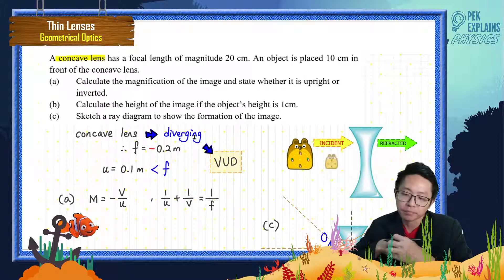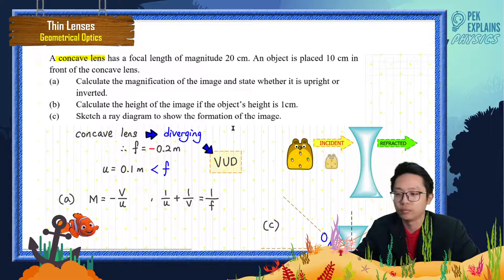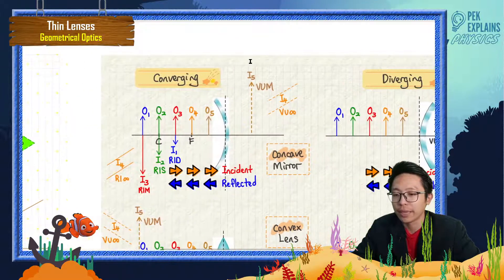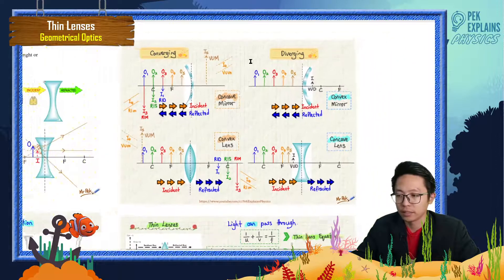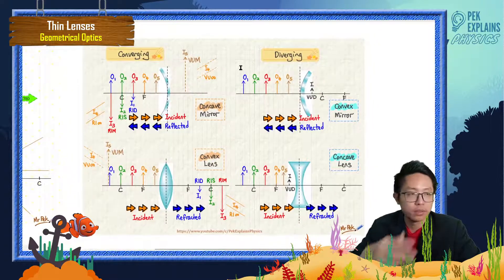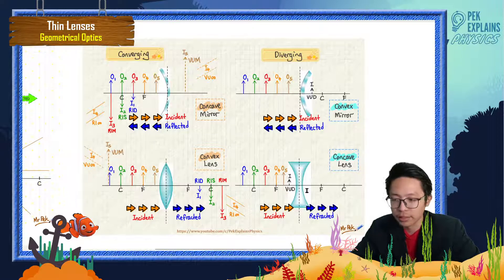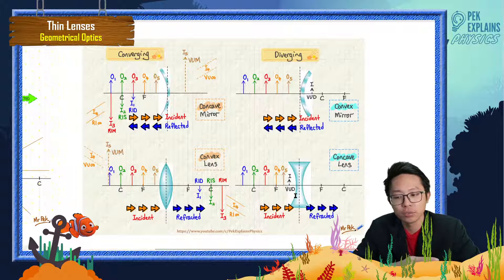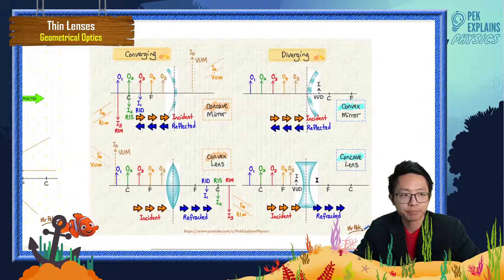For a diverging lens, there is only one characteristic of image it can form. Remember the acronym for converging and diverging lenses — it is very useful because at a glance you can straight away know the image characteristics. For a diverging lens — which is the concave lens — no matter where the object is, the image is always virtual, upright, and diminished.